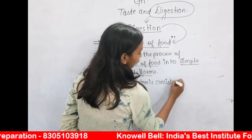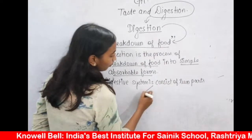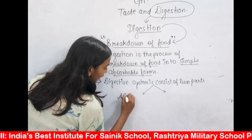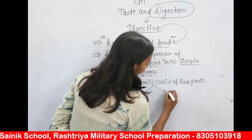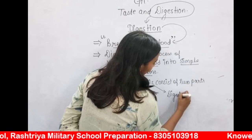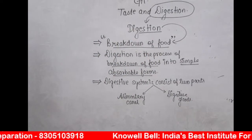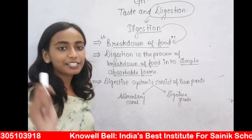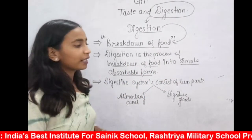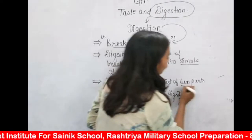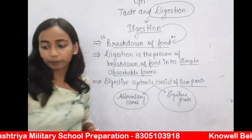The digestive system consists of two parts. What are the two parts of the digestive system? The two parts are: alimentary canal and digestive glands. So to summarize: digestion is the process of breakdown of food into simple absorbable forms. Our digestive system is made up of two parts — alimentary canal and digestive glands.